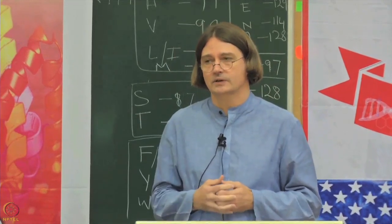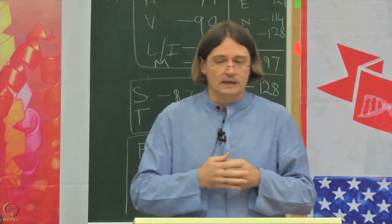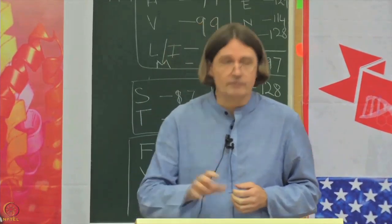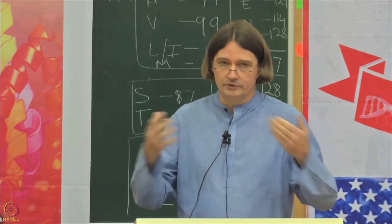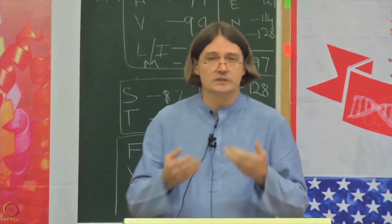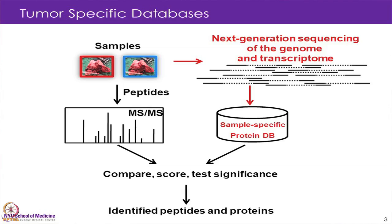In cancer there are a lot of changes in the genome, and these could lead to changes in protein sequence. But if we just use the reference protein sequence database, we will not be able to identify this. Now since we have both genomics and proteomics data, we can use the genomics data to modify our database to add in all the effects of the genomic changes.